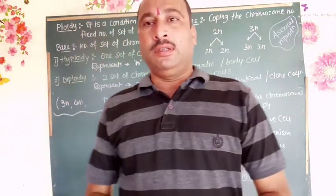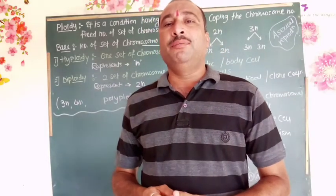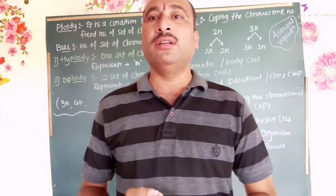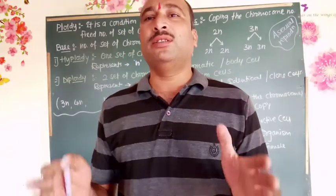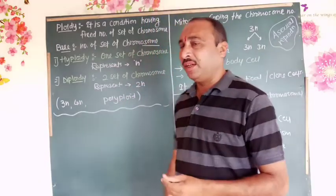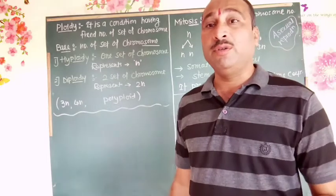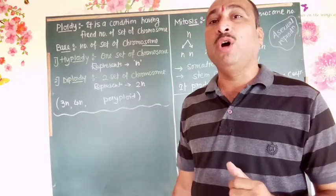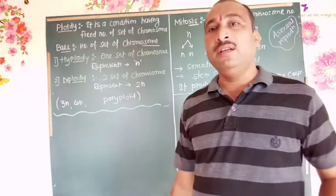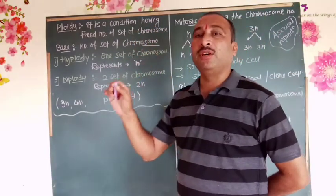Hi friends. What was your basic understanding regarding cell division? I told you about the video. Now, first we will study ploidy. It is one of the conditions of living things. P-L-O-I-D-Y. What is ploidy? Ploidy is the condition of having a fixed number of sets of chromosomes.